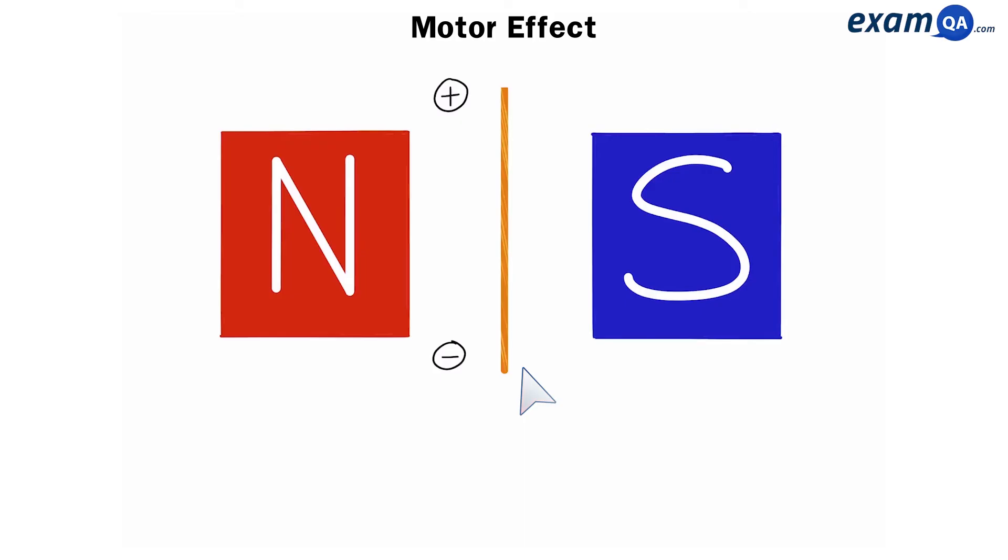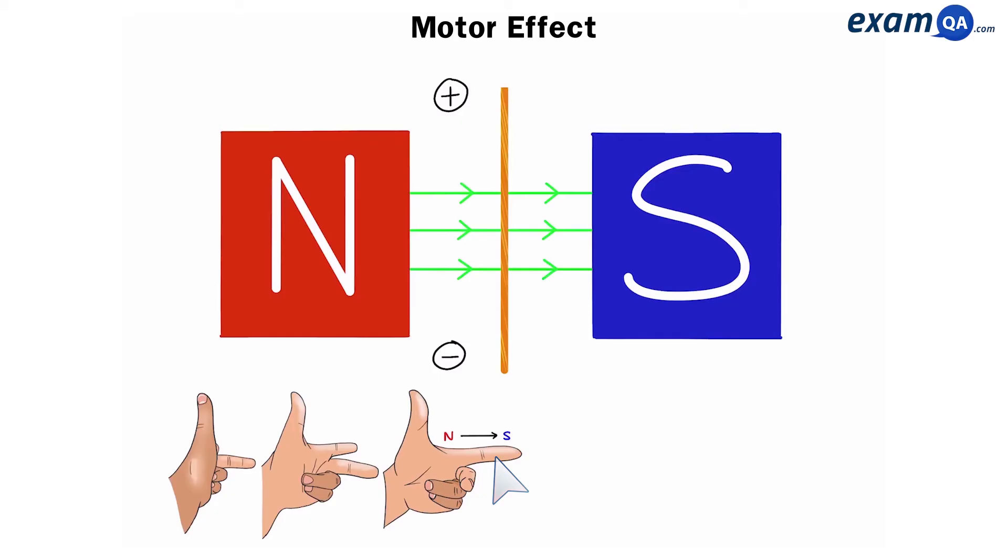So, here we have a wire between two magnets. We've also been given the direction of the current. Will this wire move into the paper and away from us, or will it move out of the paper and towards us? First of all, we have to get our left hand ready. Now, we're going to point from north to south with our first finger. Now, the first finger is lined up with the magnetic field, pointing from north to south.